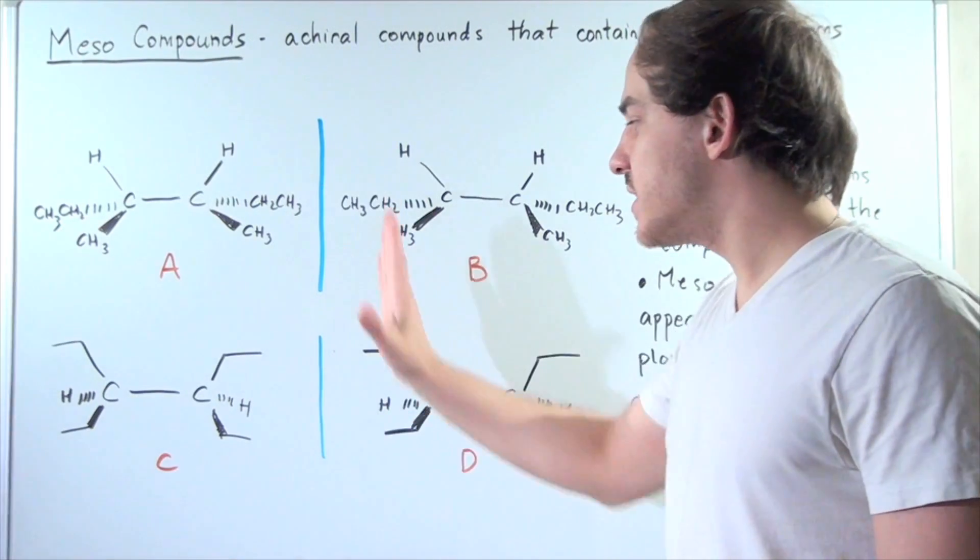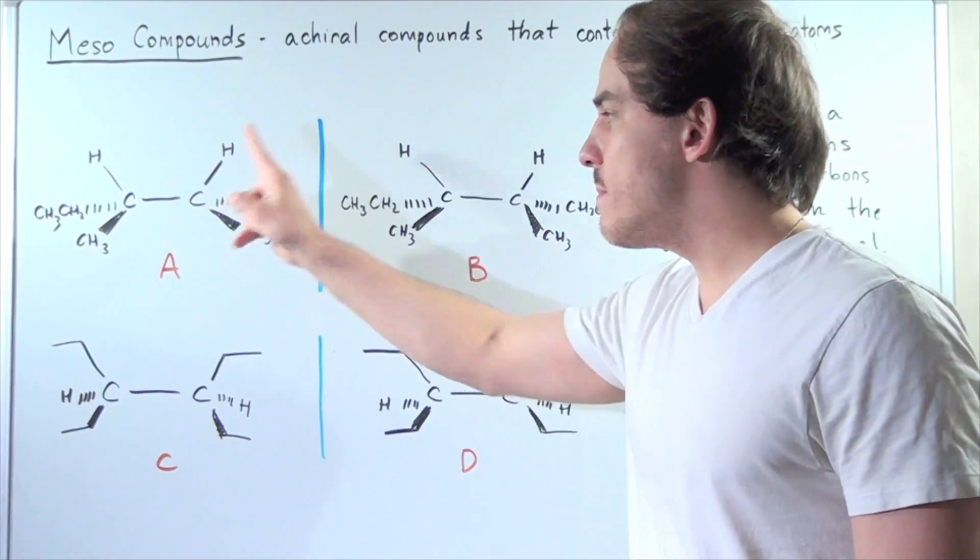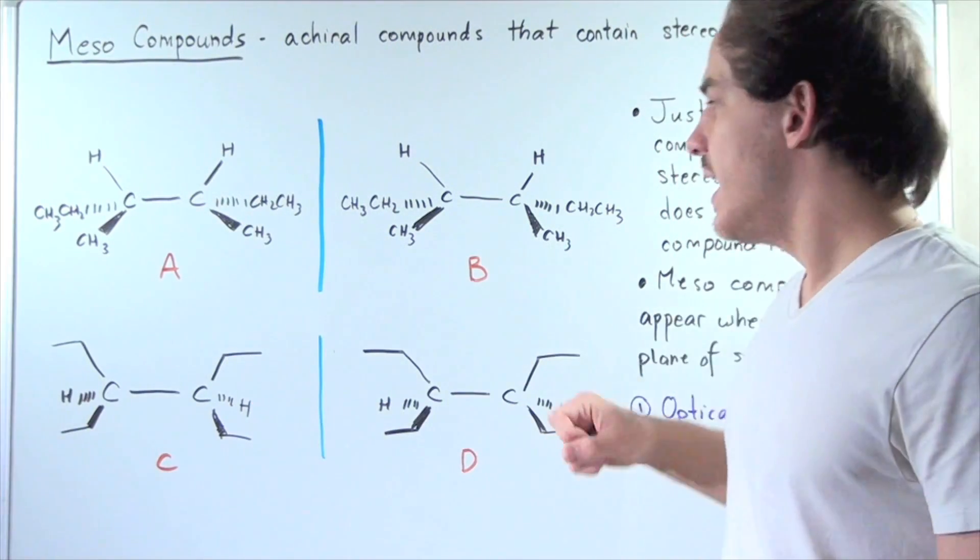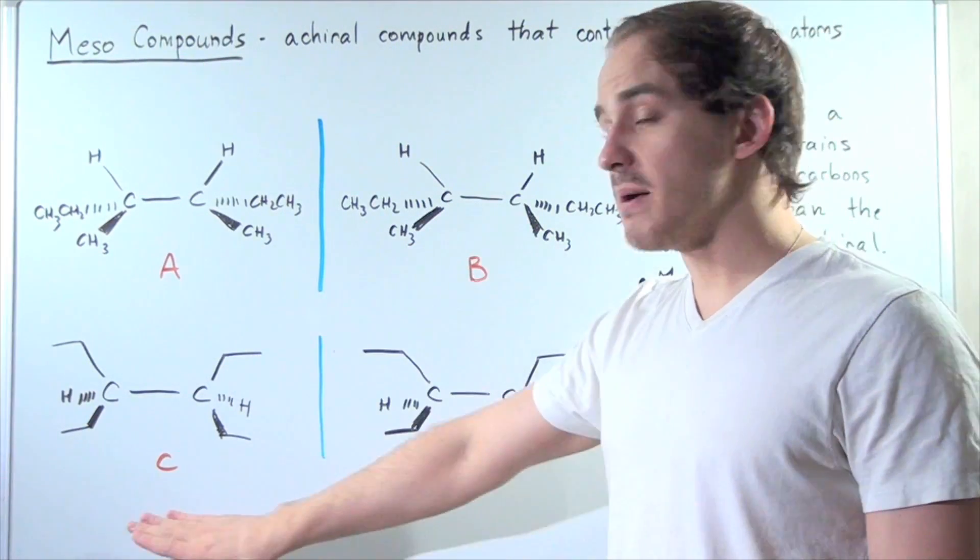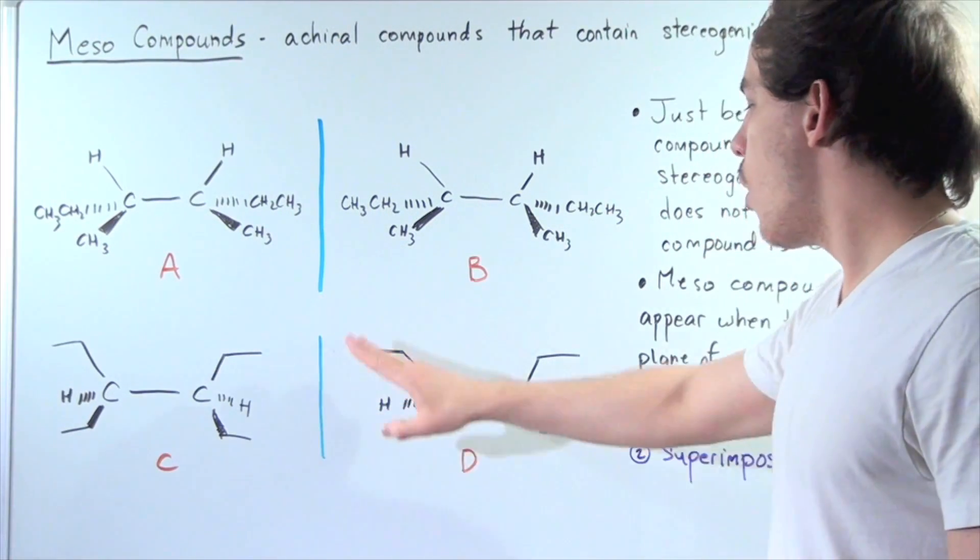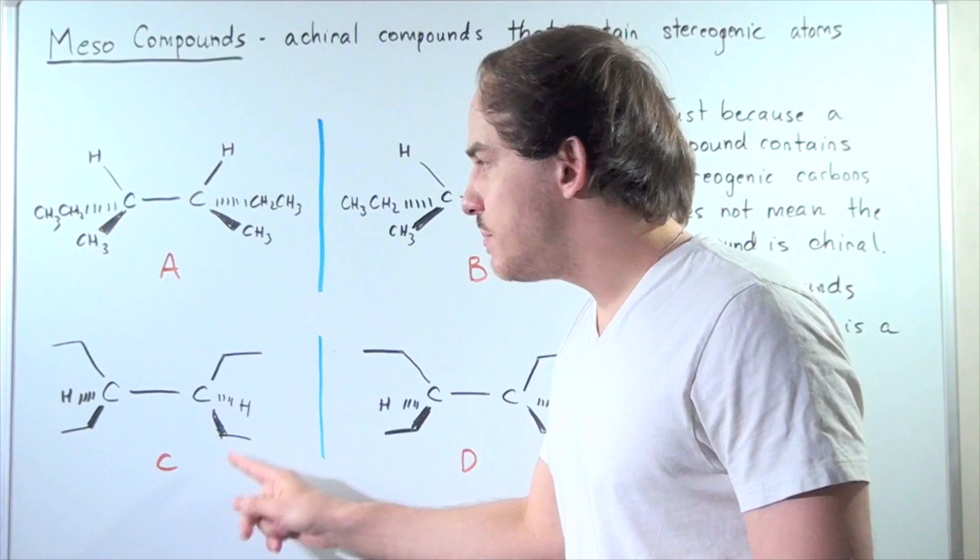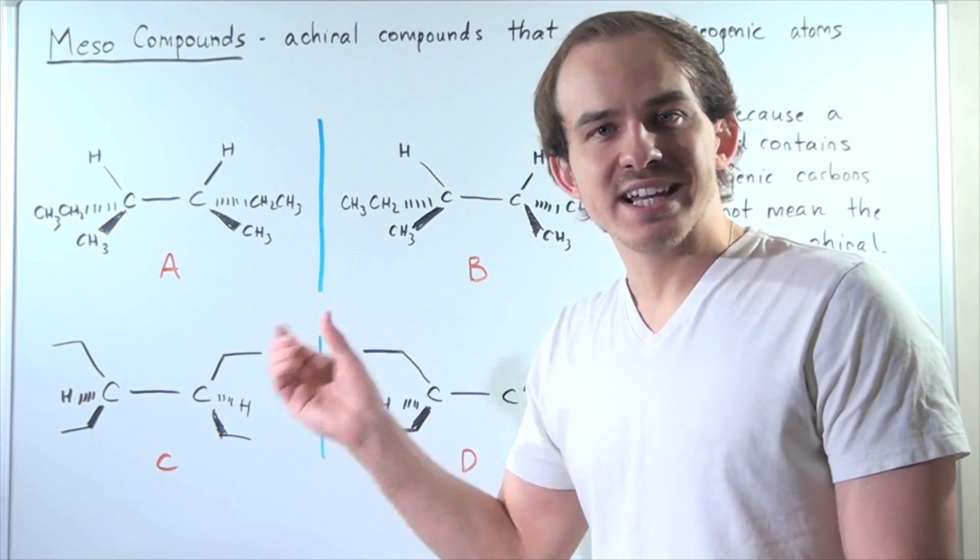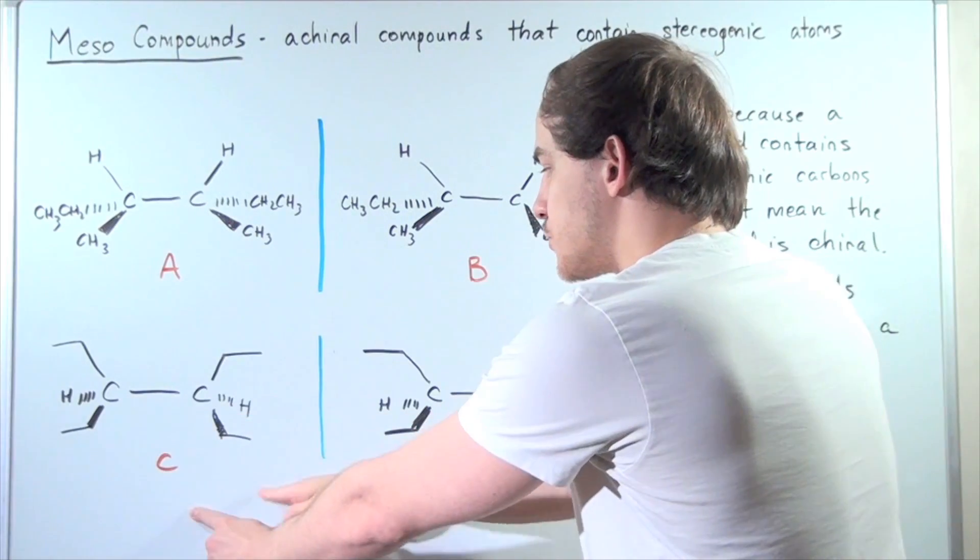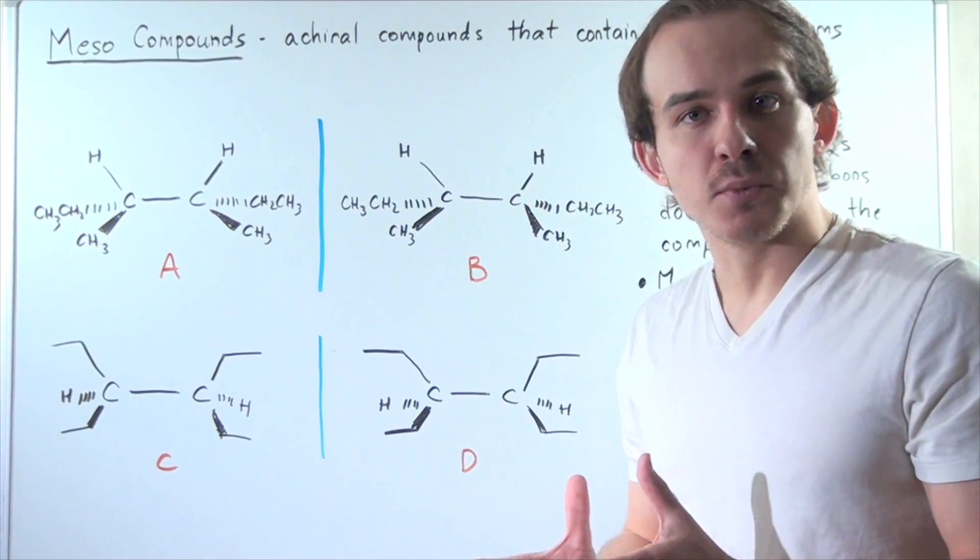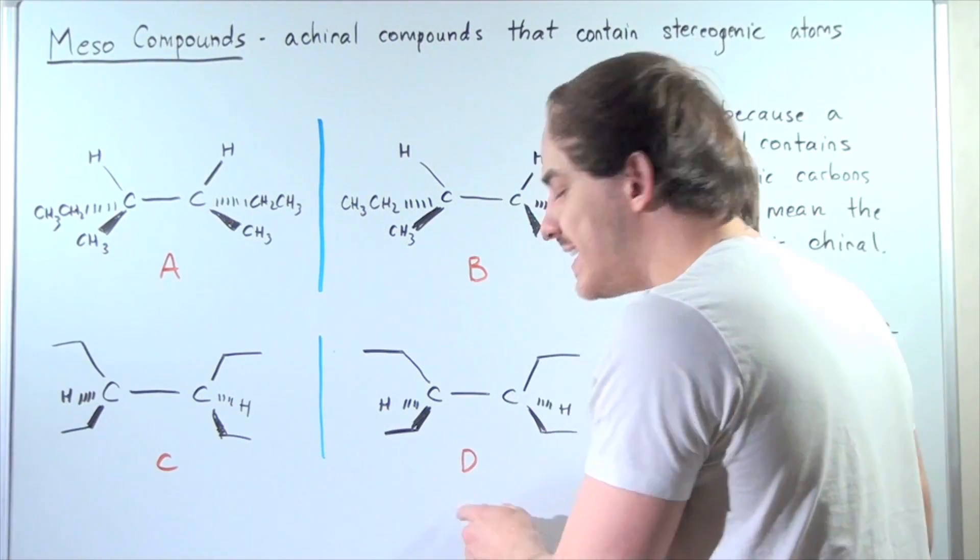Let's take the mirror image of both compounds A and compound C. So the mirror image of compound A is compound B, shown here, and the mirror image of compound C is compound D, also shown here. Notice that A and B both have stereogenic atoms, but are these two pairs of molecules enantomers? Are A and B enantomers and are C and D enantomers?